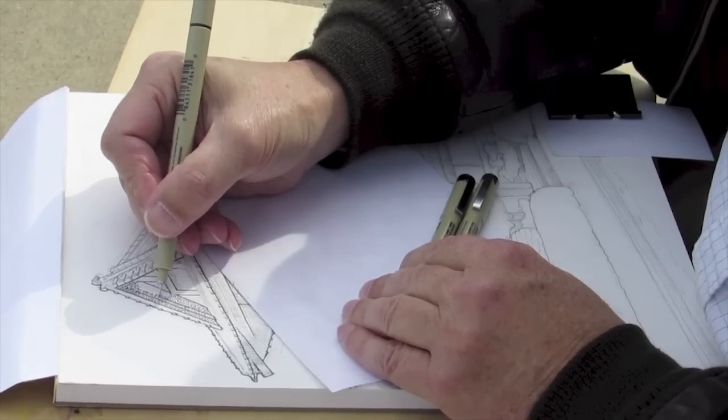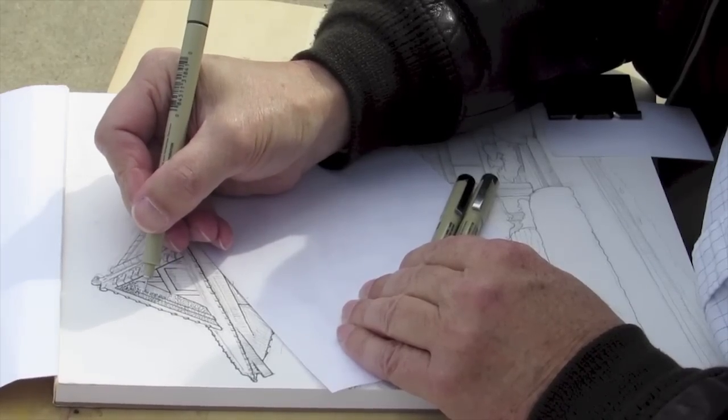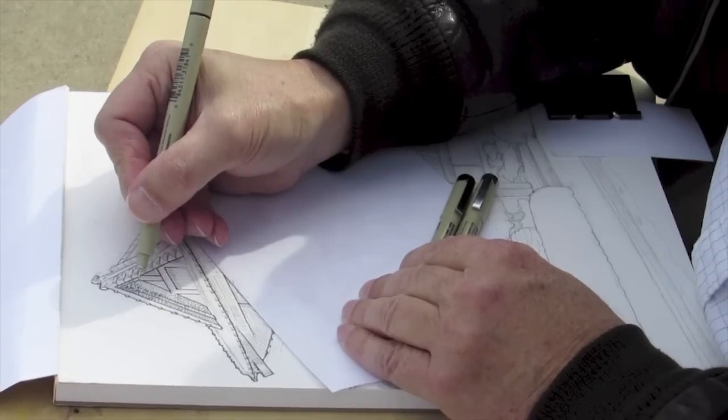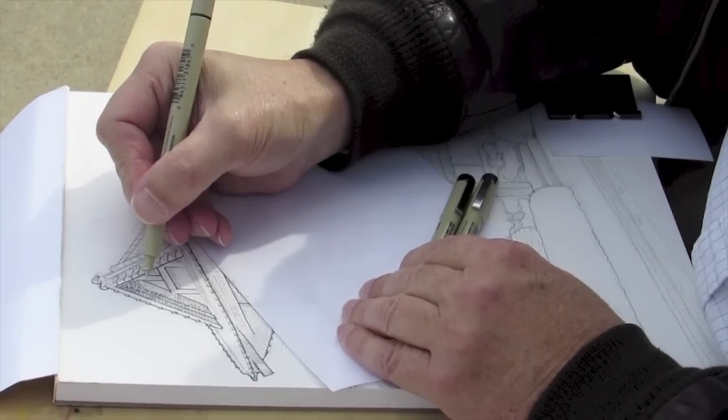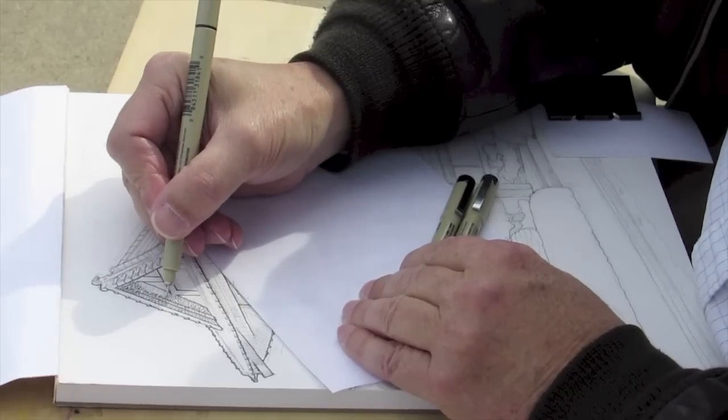And among the advocates of the pointillist style, there were people who liked the idea but didn't like the time that was involved. And so, unlike Seurat, they wouldn't actually use dots. They'd use short hatch marks.